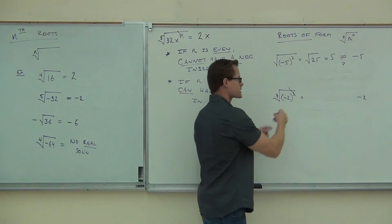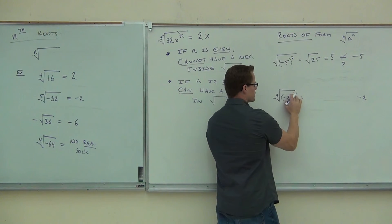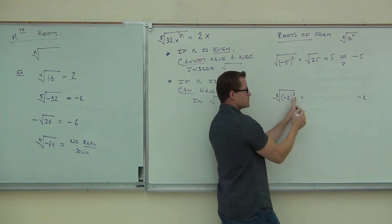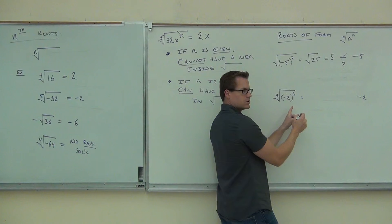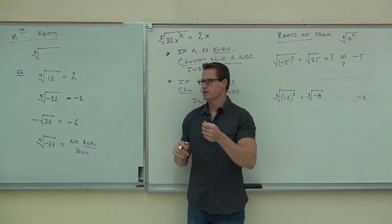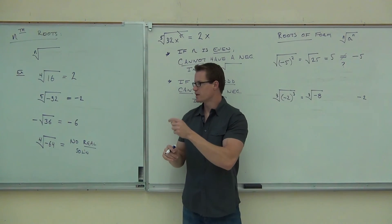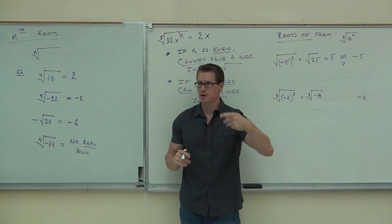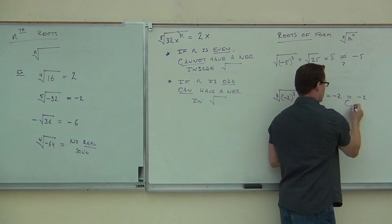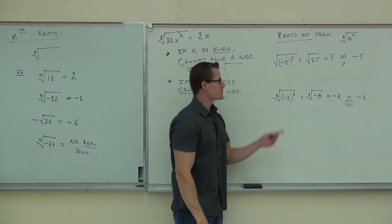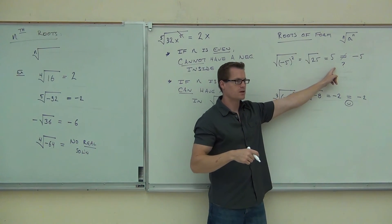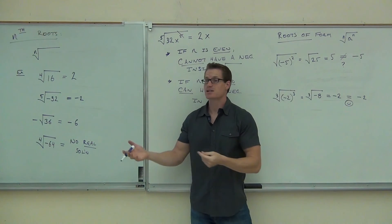Why does that happen? Check it out: if we have negative 2 cubed, what's negative 2 cubed? Negative 8. What's the cube root of negative 8? Negative 2 — not just 2. Negative 2 times negative 2 times negative 2 is negative 2. Those do work out the way we want. That one's odd — happy face. This one though: the even case, we couldn't just cross it out. That's the reason why: if you have an even power, it makes whatever you have inside the root positive, no matter what. The negative inside a third power or fifth power or any odd power keeps the negative.